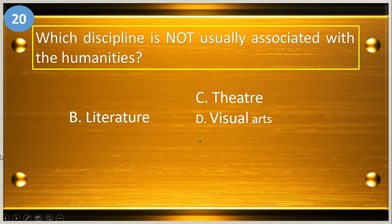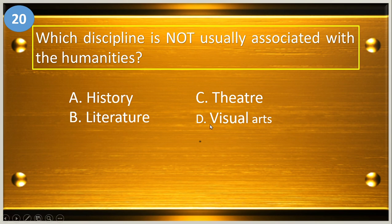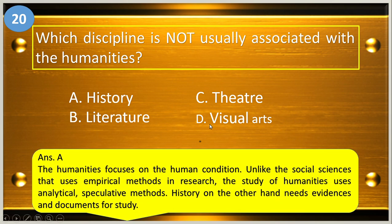Number twenty: which discipline is not usually associated with humanities? A, history; B, literature; C, theater; and D, visual arts. The answer is letter A, history.